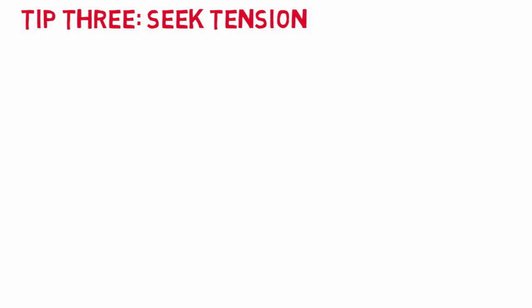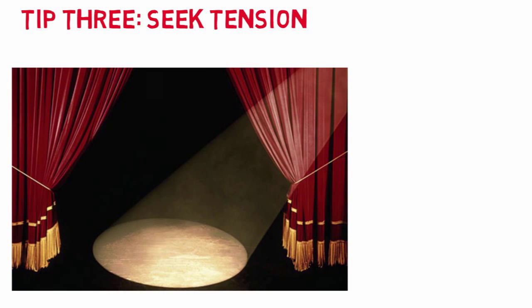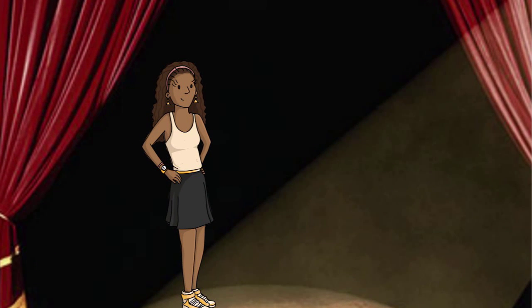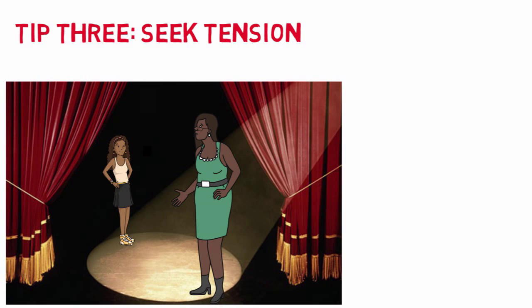Tip number three: seek tension. In our last episode, two actors were playing sisters in a power struggle. Tension built as they got closer to each other. Let's imagine they were nose to nose at the climax. If the older sister won the beat verbally but the actor stepped back, it would appear visually like she lost. Many times as an actor, we feel the physical discomfort of tension and release the tension by stepping away. We must maintain the physical tension.